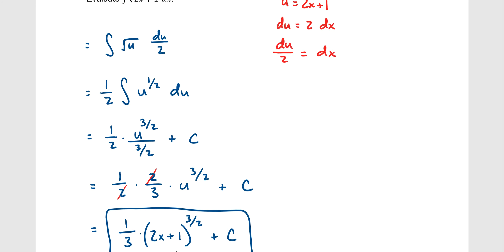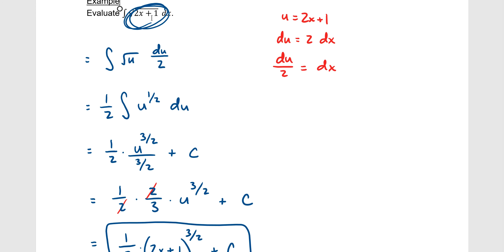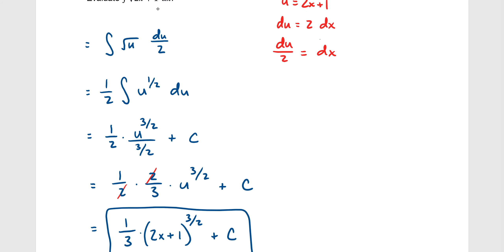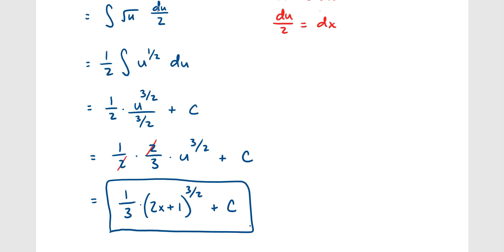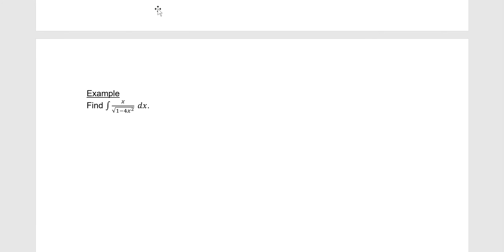So if you see a function within a function with a linear term inside, letting u equal that inner expression will give you just a constant when you differentiate — a constant you carry along as you change the variable.